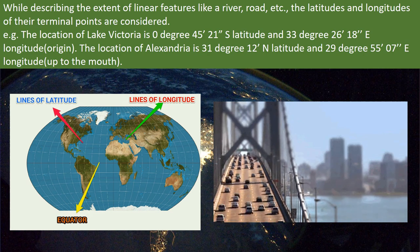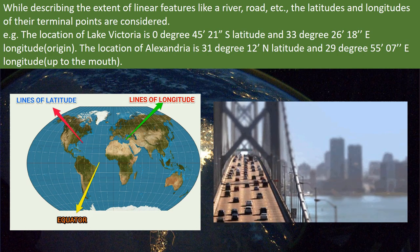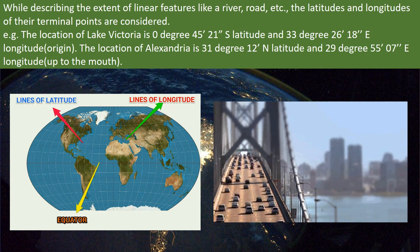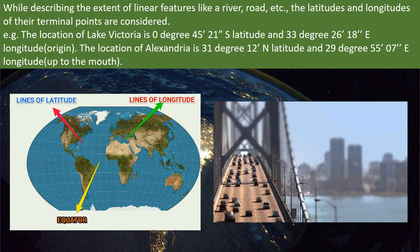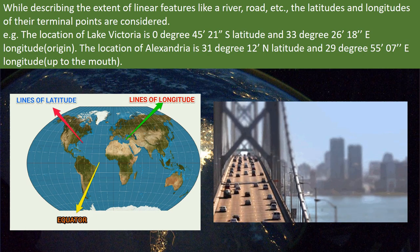These latitudes and longitudes are considered to describe the extent of the river Nile. This extent is from 0 degree 45 minutes south latitude and 33 degree 26 minutes east longitude, i.e. the place where it begins, to 31 degree 12 minutes north latitude and 29 degree 55 minutes east longitude.